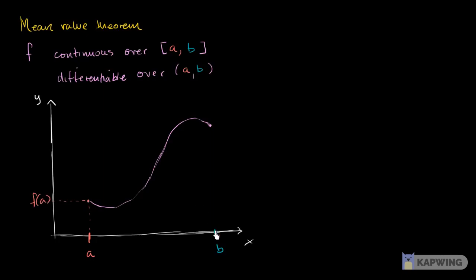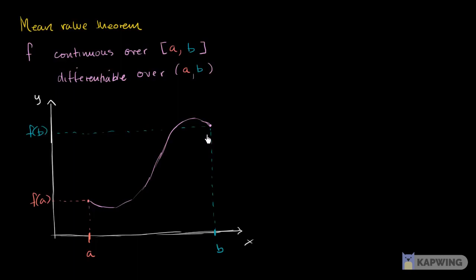This point right over here has x-value b and y-value f of b. So all the mean value theorem tells us is: if we take the average rate of change over the interval, at some point the instantaneous rate of change — at least at some point in this open interval — is going to be the same as the average change.